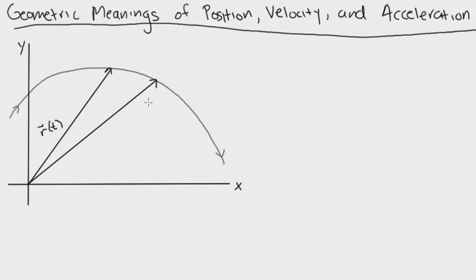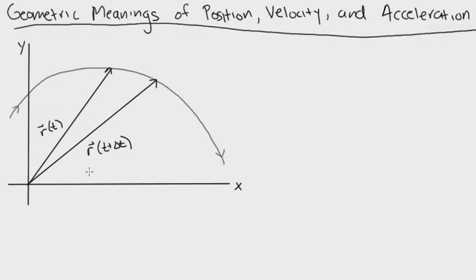The second position vector, sometime later, is going to be r of t plus delta t. This is basically the definition of the position vector — it maps a position relative to some origin. So if you have a function r with respect to t, you can define the particle's position at any given moment of time if you know the value of t you're looking for.